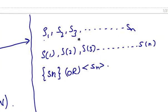S1, S2, S3, so on up to Sn, or S of 1, S of 2, S of 3, so on up to S of n. Or it can also be denoted as S of n in floor brackets or S of n in arrow brackets.